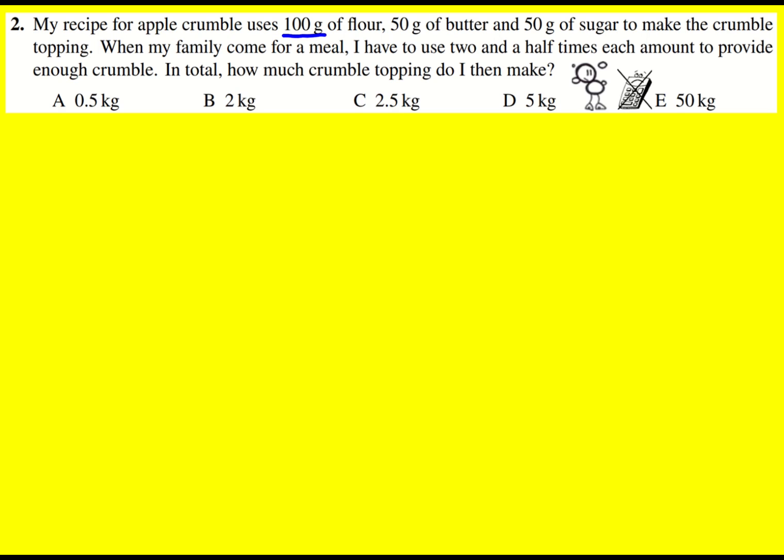We have the recipe for apple crumble: 100 grams of flour, 50 grams of butter, 50 grams of sugar. And then we're told when my family come round we need to use two and a half times each amount to provide enough crumble. How much do we need to make overall?